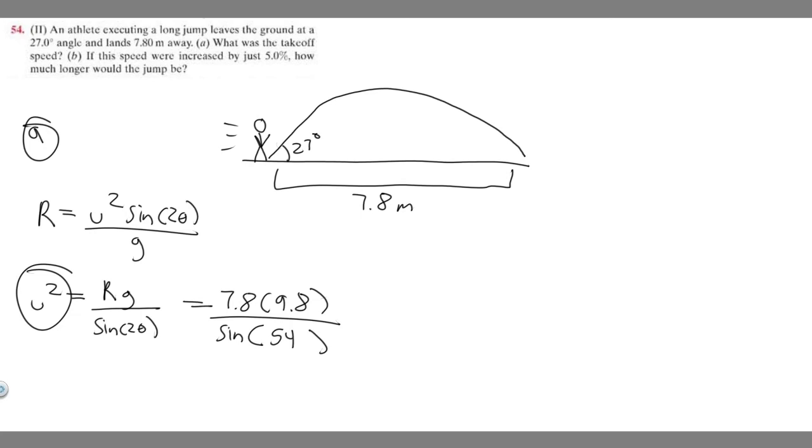This is going to equal U squared. If you go ahead and solve this, you're going to get that it equals 94.48. So U squared equals 94.48. If we want to find U, just square root both sides. U equals the square root of 94.48, which gives us 9.72 meters per second.